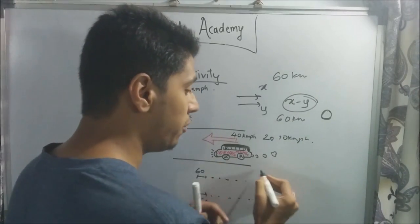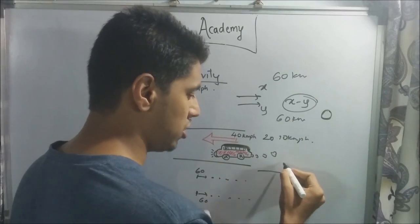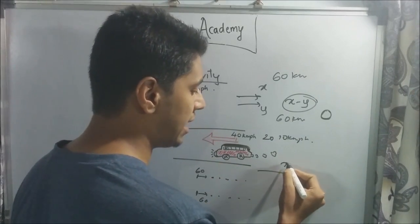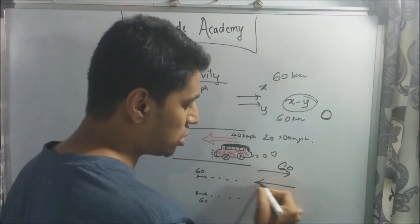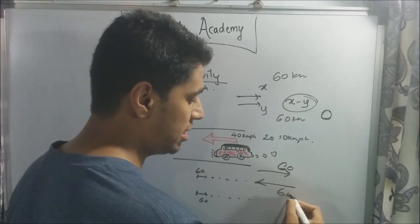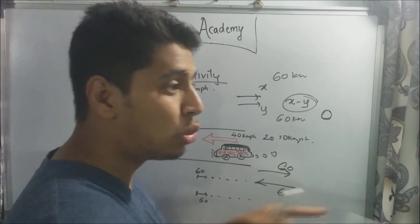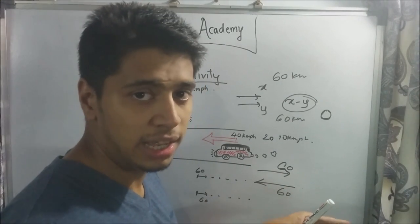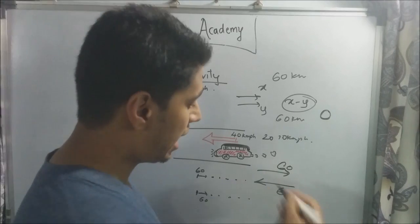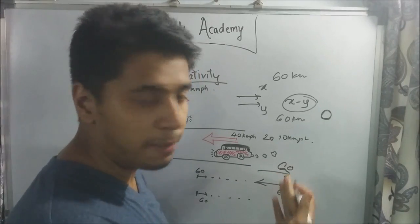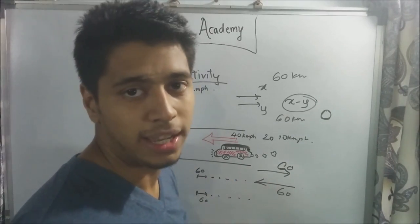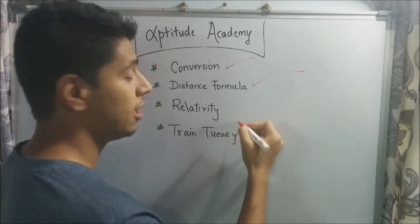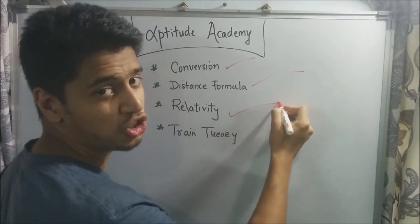Whereas if trains move in the opposite direction — both at 60 km/h — you will zoom past each other, and each person will think the other train is going at 120 km/h. Relativity: check.